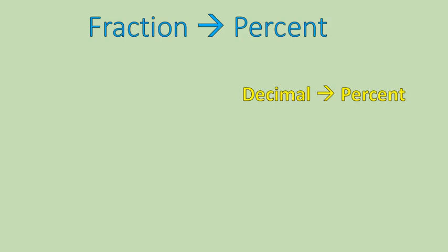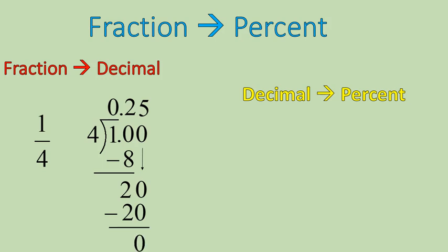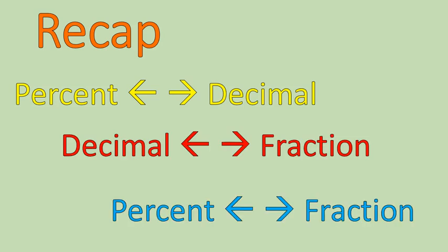Going from a fraction to a percent requires two steps: fraction to decimal, then decimal to percent. If I'm given one-fourth, I start by dividing — one-fourth equals 0.25. Then I convert that decimal into a percent by multiplying by 100, giving us 25%. So one-fourth equals 25%. There are some extra steps, but they're all steps we've covered previously.